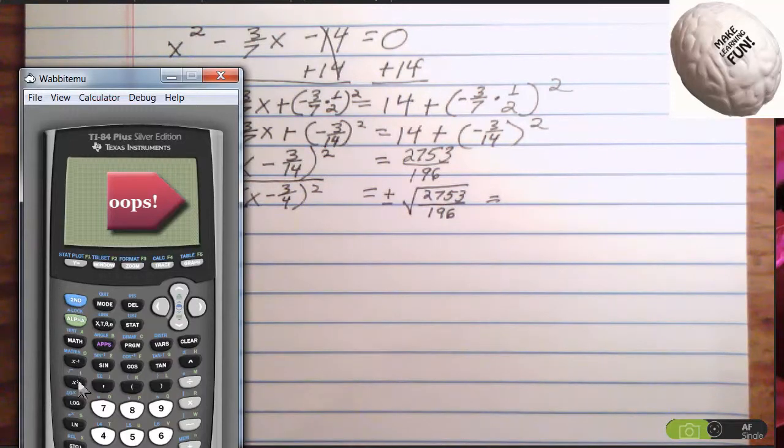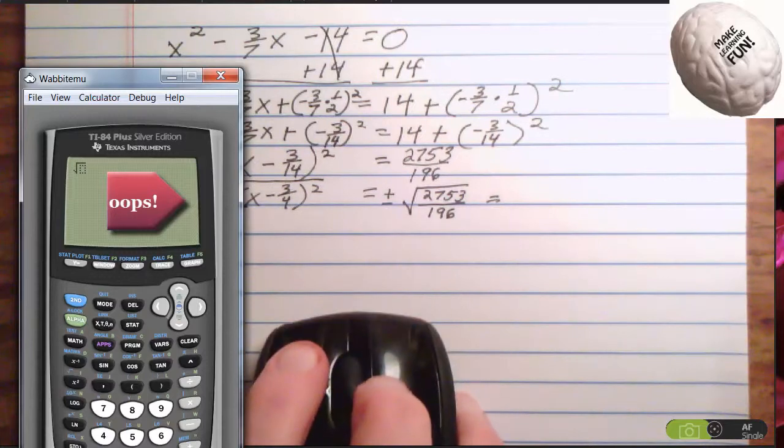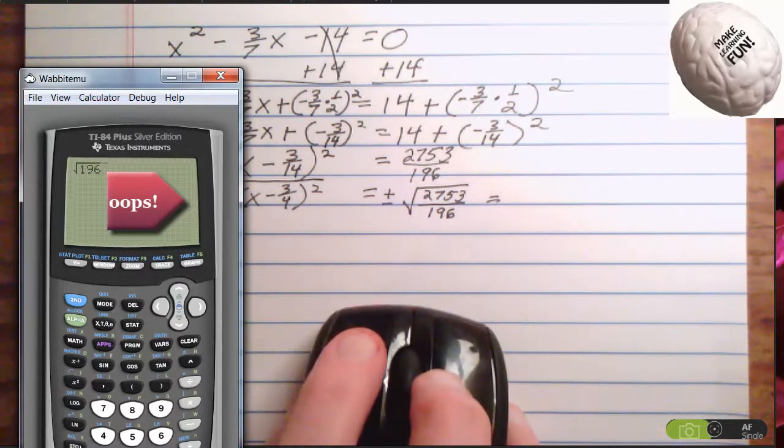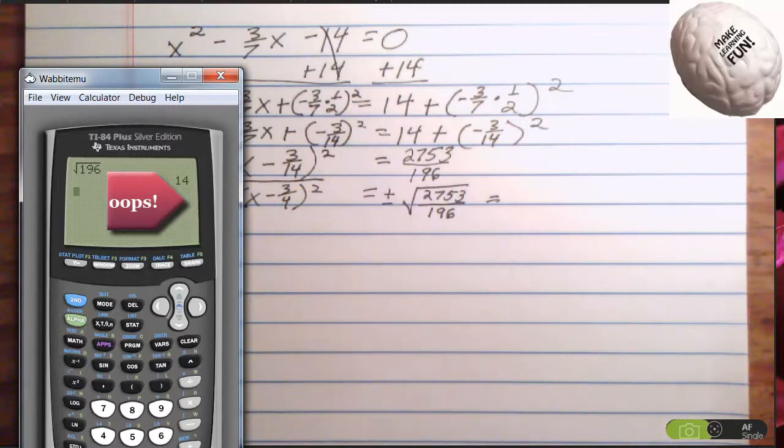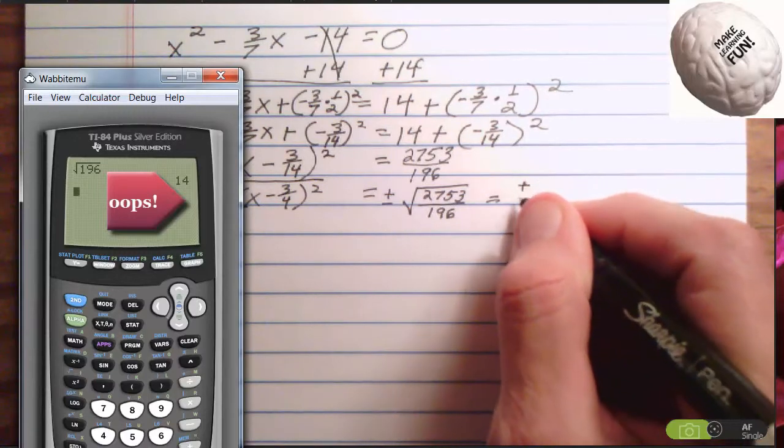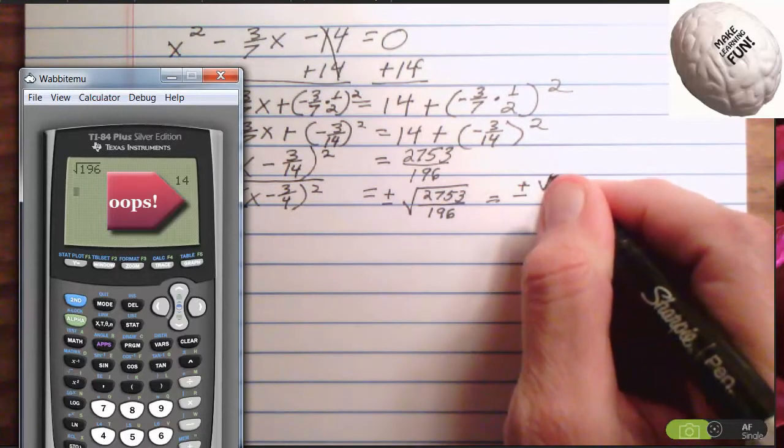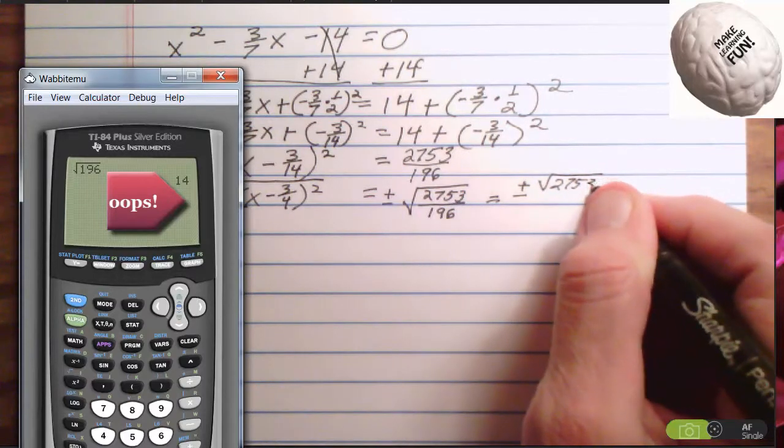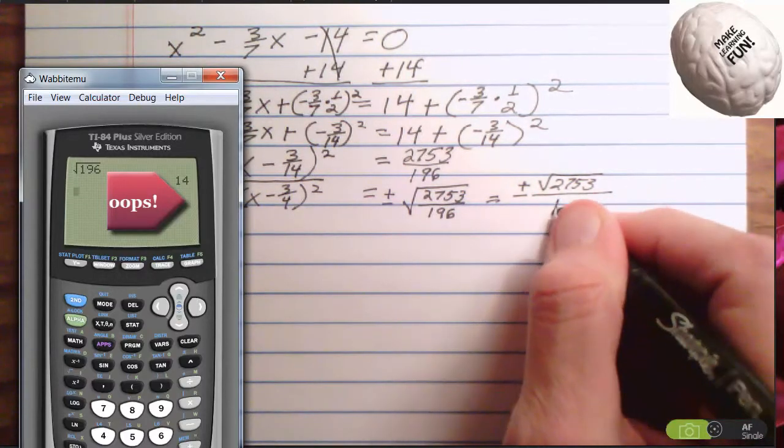We're going to go second x square 196. 14. Alright. So the right-hand of the equation is going to be plus minus the square root of 2753 over 14.